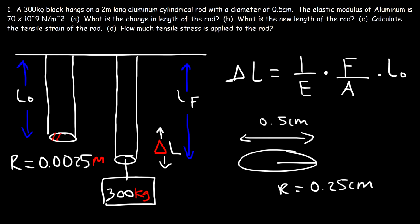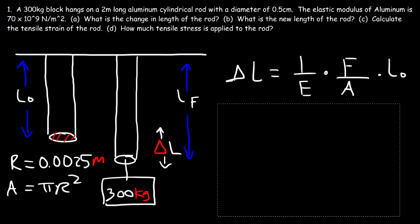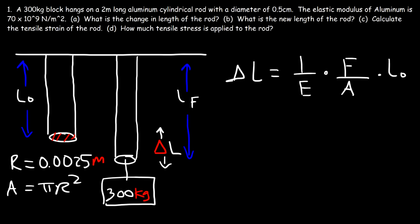Because this is the shape of a circle, the area is pi r squared. Now let's plug in everything that we have. The only thing missing is the force exerted on the rod. We have the original length of the rod, which is 2 meters.